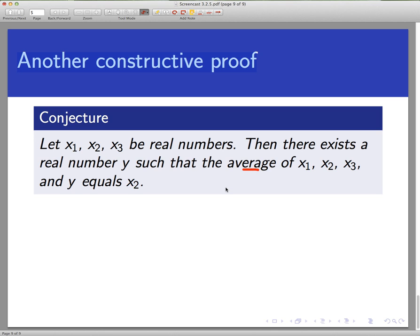And average, of course, just from your basic stats knowledge, would be the sum of x₁, x₂, x₃, and y divided by 4. So I'm claiming that something exists. The one excellent way to claim that something exists is just to simply build it and produce it. And if you have it right there in front of you, then it obviously exists.